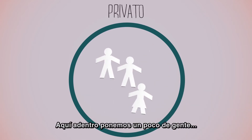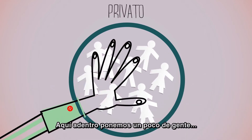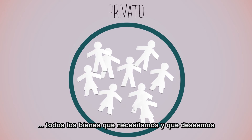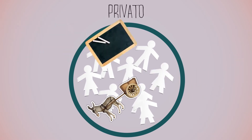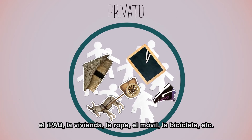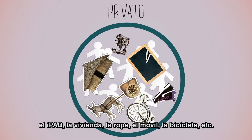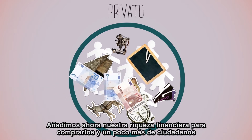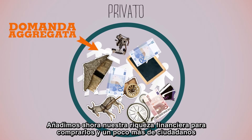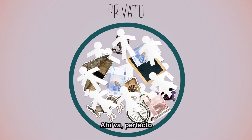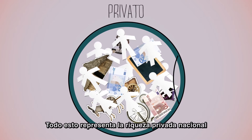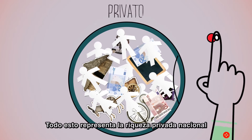Qui dentro ci mettiamo un po' di gente, tutti i beni che ci servono e che desideriamo, a cominciare dall'automobile, il pad, la casa, l'abbigliamento, il telefonino, la bicicletta, eccetera. Ora ci mettiamo la nostra ricchezza finanziaria per acquistarli ed un altro po' di cittadini. Tutto questo rappresenta la ricchezza privata nazionale.